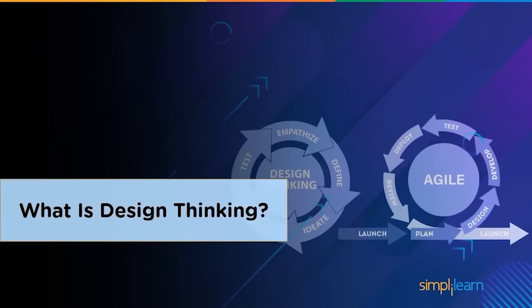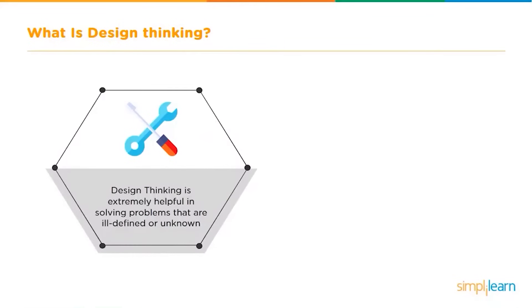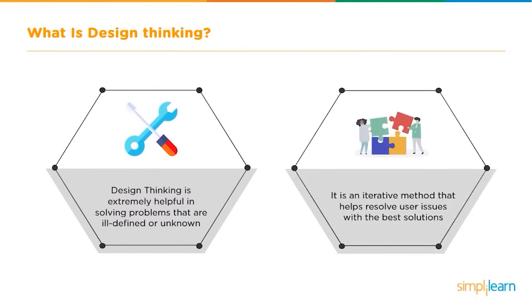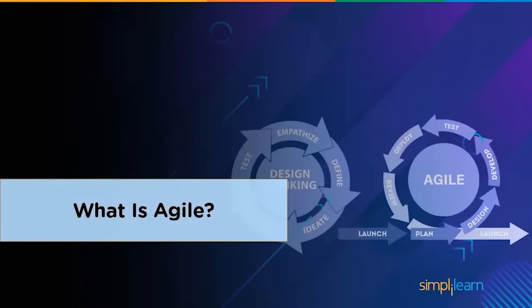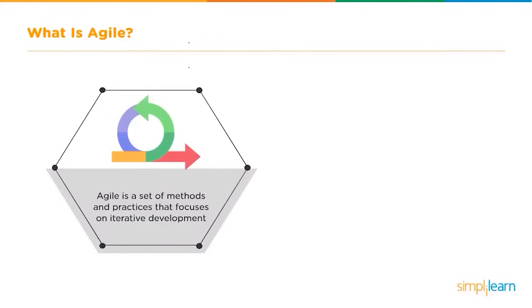Design thinking is extremely helpful in solving problems that are ill-defined or unknown — an iterative method that helps resolve user issues or redefines problems with the best solutions. Agile is a set of methods and practices that focuses on iterative development, where requirements and solutions are obtained through self-organizing, cross-functional teams collaborating together.